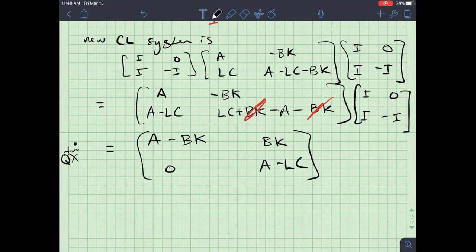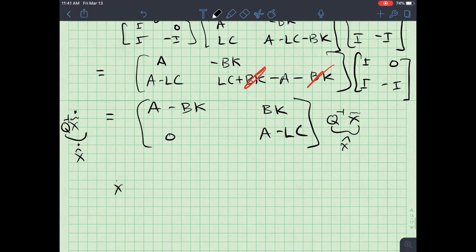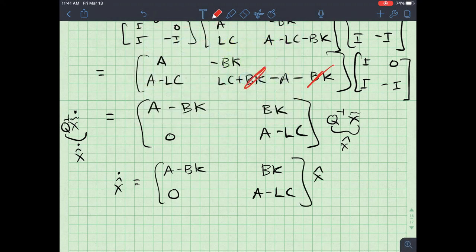And then I'm post multiplying by I zero I minus I. So this leaves me with A minus B K. B K zero and A minus L C. That's what X tilde dot with the Q inverse in front of it is. So that's really, and then I'd be Q inverse X tilde. So I know that Q inverse X tilde is just my X hat. So I've got X hat dot and X hat here. So let me write this out more clearly. I know X hat dot is equal to A minus B K B K zero A minus LC X hat. And I can call this matrix here a nice, happy A hat.